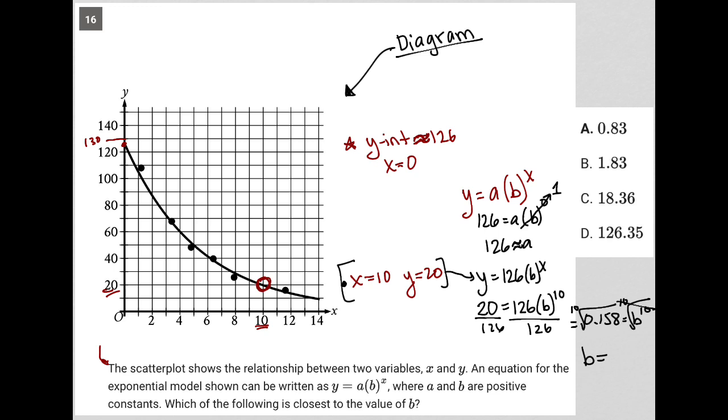I'm going to go to Desmos now and actually type in the 10th root of 0.158. And I am getting that that gives me a b value of 0.8315 and a few more numbers.